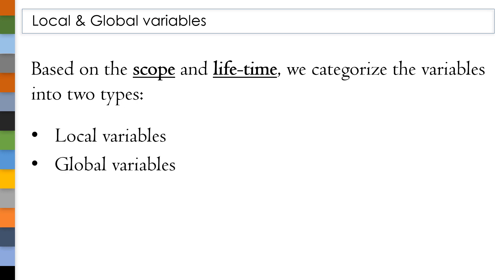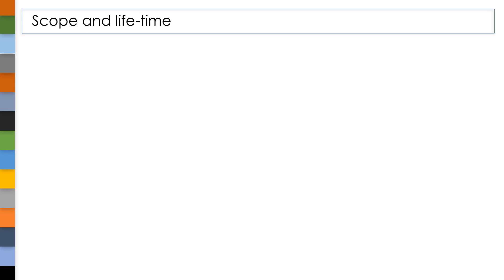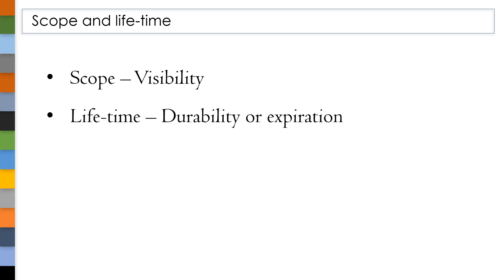Before we discuss what local and global variables are, let's take a step back and understand what scope and lifetime mean. Scope tells about visibility, whereas lifetime tells about durability of something.